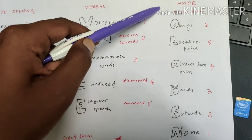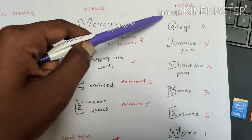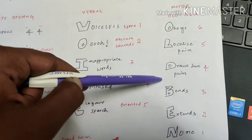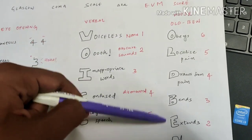This is verbal scoring. Then there comes the motor scoring - is very important one and very tough to remember. We'll forget, so that's why I made a mnemonic called OLD BEN.